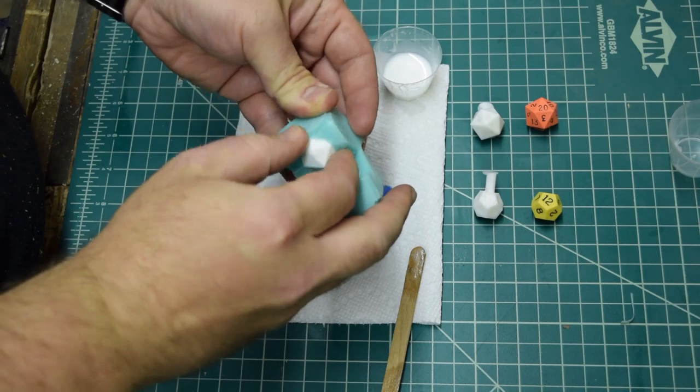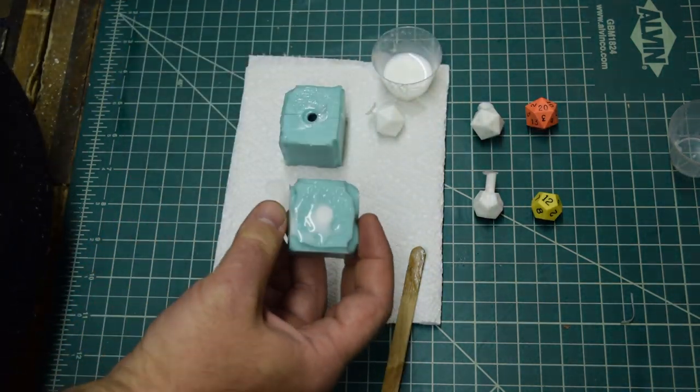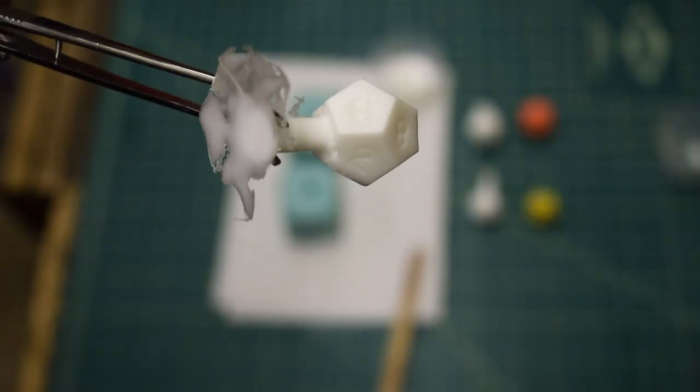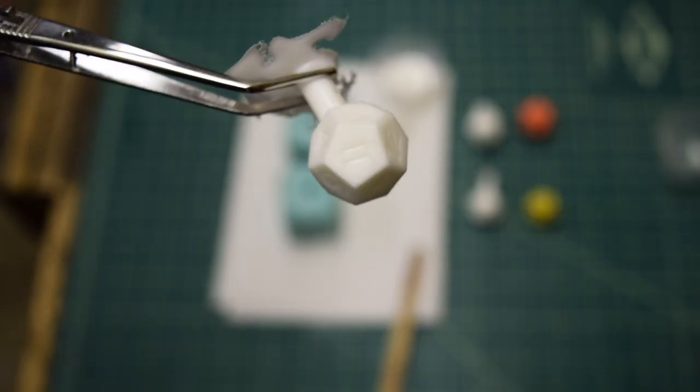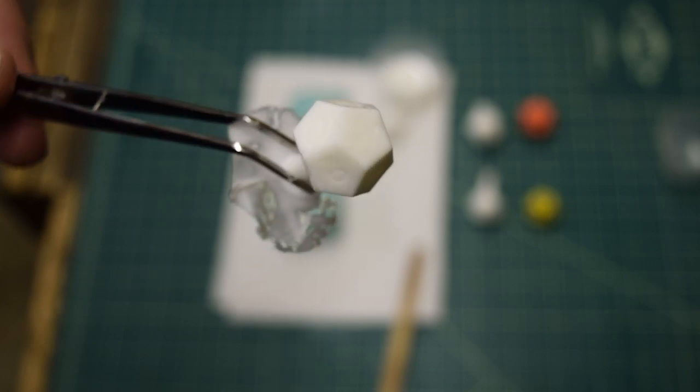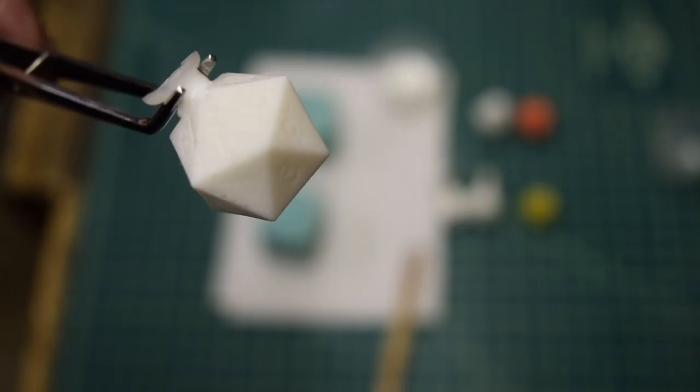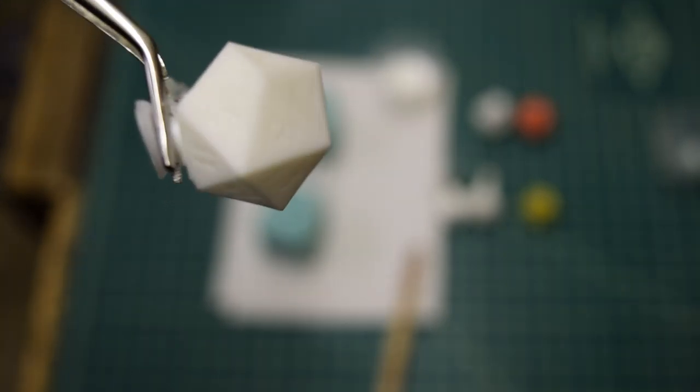After curing the second set of dice was demolded and examined. As you can see some of the surface pitting was reduced with lighter use of the mold release, but only a little. After closer inspection of the sprue it looks like the dice were molded unevenly causing high spots in the molds.